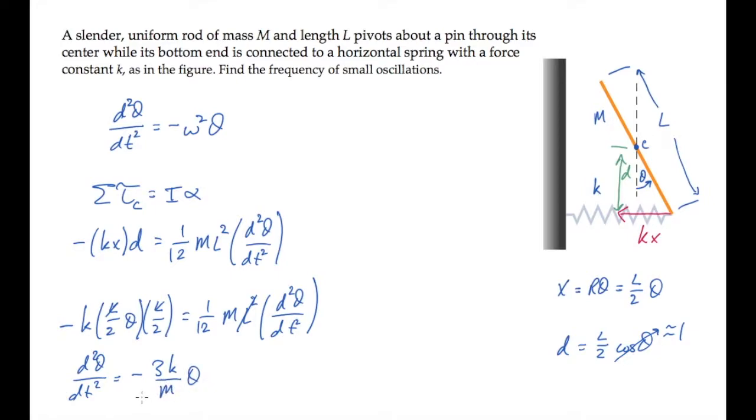Comparing with the top equation, this means that 3k over m is the square of the angular frequency. So this is omega, and the linear frequency f is 1 over 2 pi times the square root of 3k over m.